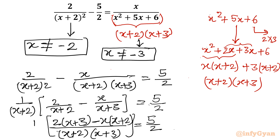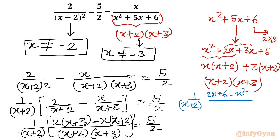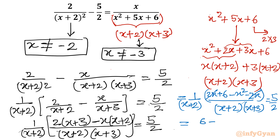Outside there is the factor 1 over (x+2). In the numerator we get 2x plus 6 minus x² minus 2x, and the advantage is that 2x cancels out. The denominator remains (x+2)(x+3), and the right-hand side is the constant 5 over 2.